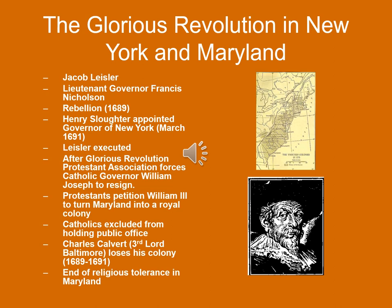You can see a map of the colonies on the right, and an image of Jacob Leisler — the militia leader somewhat in the mold of Nathaniel Bacon — who led a rebellion and ended up being executed.